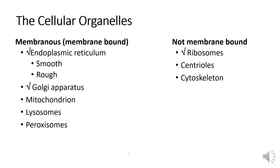We've covered many cellular structures and functions, including the rough and smooth ER, the Golgi apparatus, and ribosomes. This might be a good opportunity to look at your assignment or worksheet and answer some questions pertaining to those organelles. When you're ready, we'll continue to discuss the other organelles: mitochondria, lysosomes, peroxisomes, centrioles, the cytoskeleton, and the cell membrane.